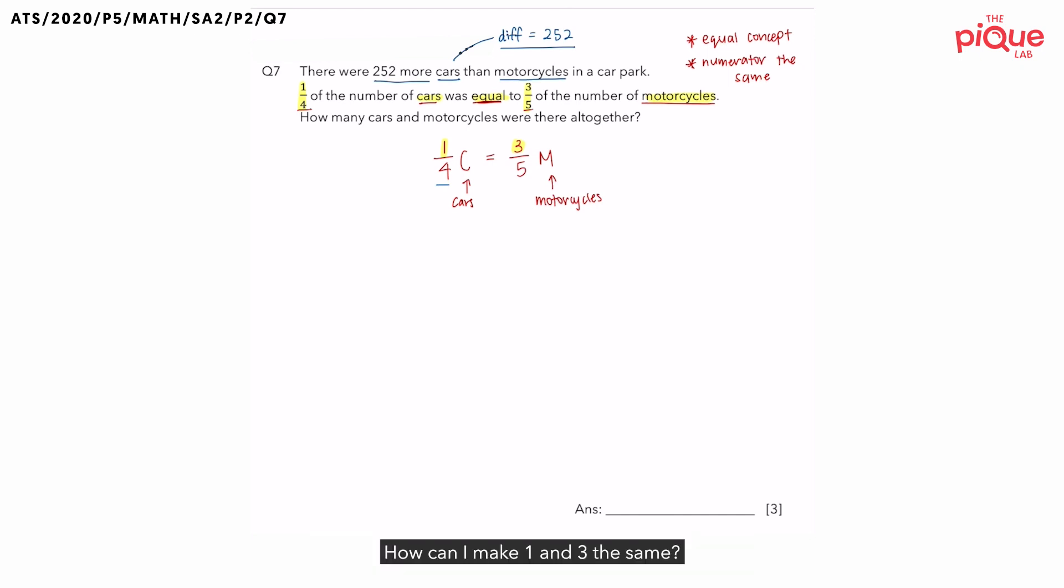We have one quarter of cars is equal to three-fifths of motorcycles. How can I make 1 and 3 the same? Let me teach you a trick. This is called finding the lowest common multiple. So the lowest common multiple of 1 and 3, we can list down, right? 1, 2, 3,